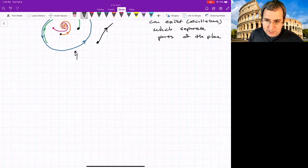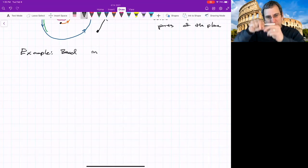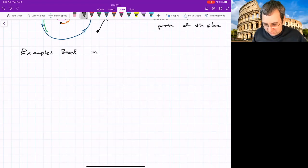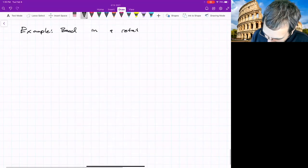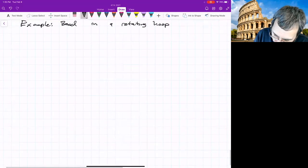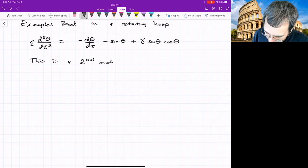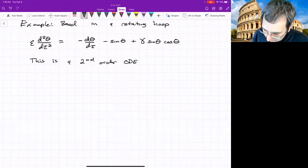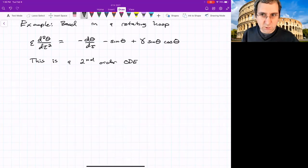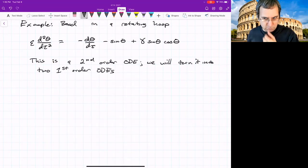And we'll look at criteria for what leads to something like this, a closed contour or periodic orbit. Periodic orbits can exist, which means oscillations, which separate parts of the plane. Let me look at an example just to get us going. And it's the same example from before. I think of a bead in a hoop, the bead in the rotating hoop. We originally formulated it as a two-dimensional differential equation. Remember when we did non-dimensionalization, we had, this is a second order ODE because the highest derivative is second order. We will turn it into two first order ODEs.